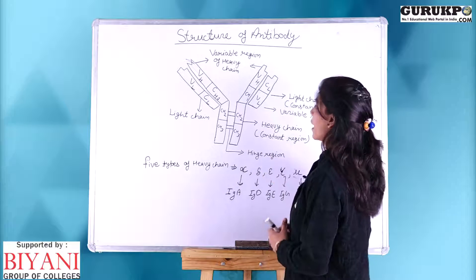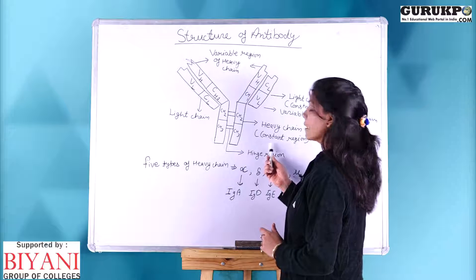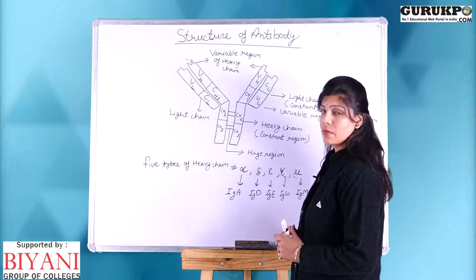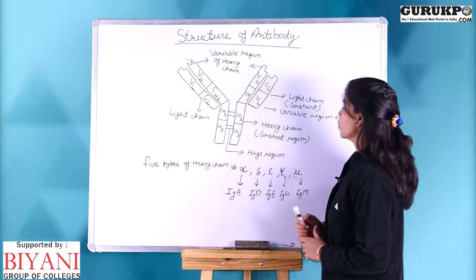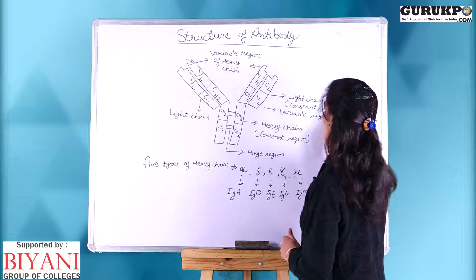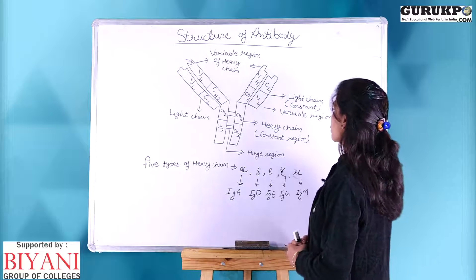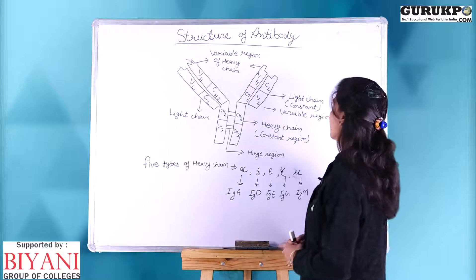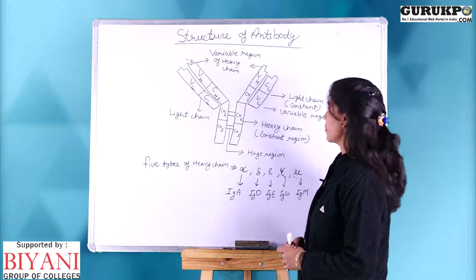The structure of antibody is like the letter Y shape structure and it is made up of two similar halves, and each half is made up of two polypeptide chains. The first is the light chain and the second is the heavy chain. The heavy chain is constituted by 450 amino acids and the light chain is constituted by 200 amino acids.